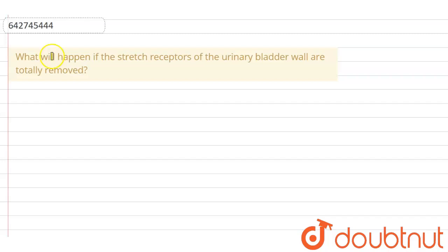What will happen if the stretch receptors of the urinary bladder wall are totally removed? Now, in case of urination, there is a process known as micturition. The process is micturition.